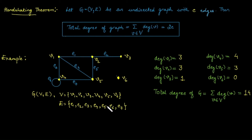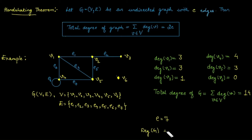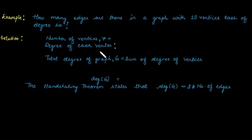A second procedure is to use the handshaking theorem, which states that the total degree of a graph equals the total number of edges times two. The total number of edges in this graph is seven, so the total degree equals 2 × 7 = 14.